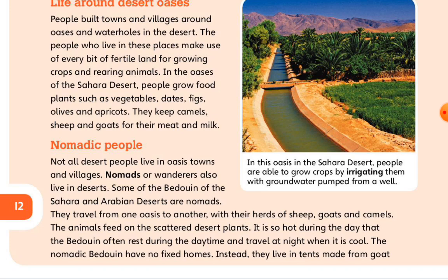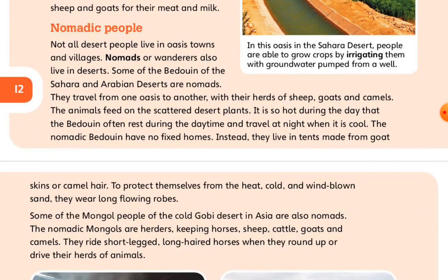people grow food plants such as vegetables, dates, figs, olives, and apricots. They keep camels, sheep, and goats for their meat and milk. The people who live in these places make use of every bit of fertile land for growing crops and rearing animals.